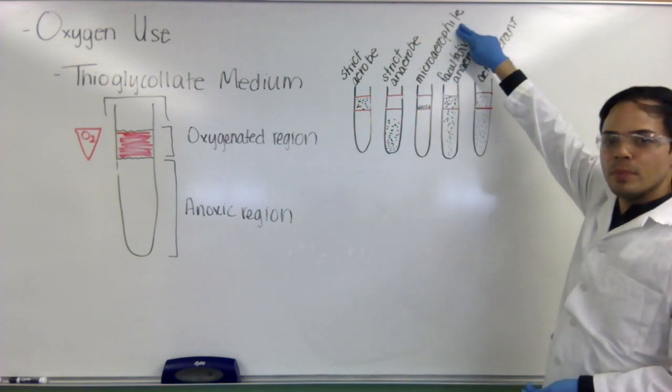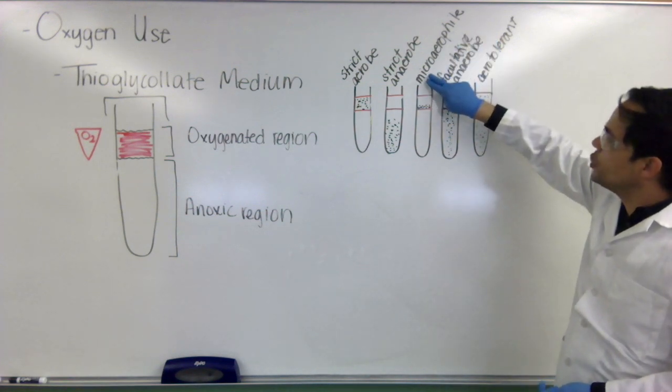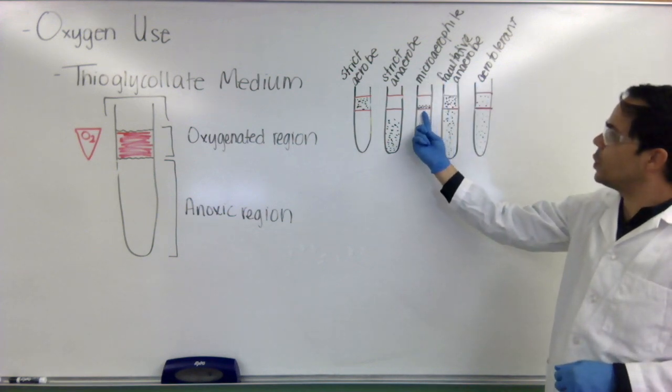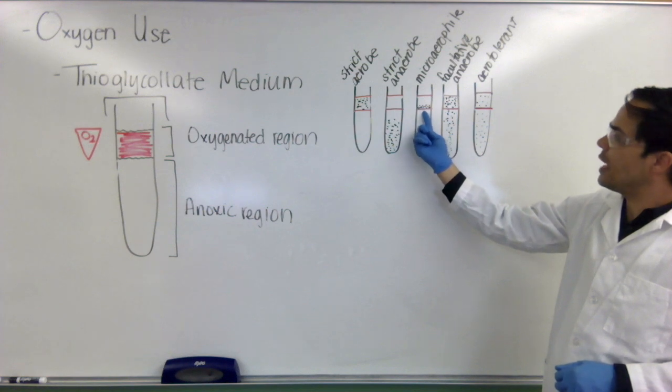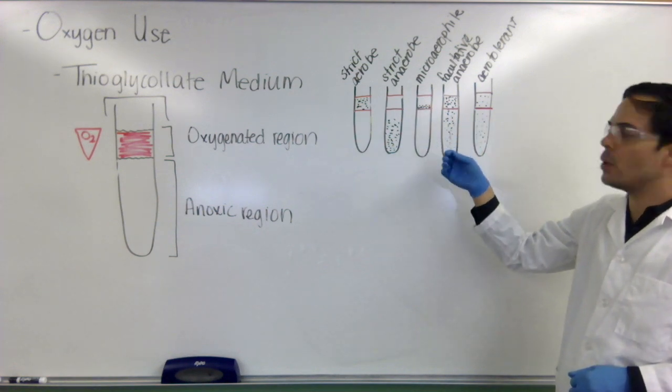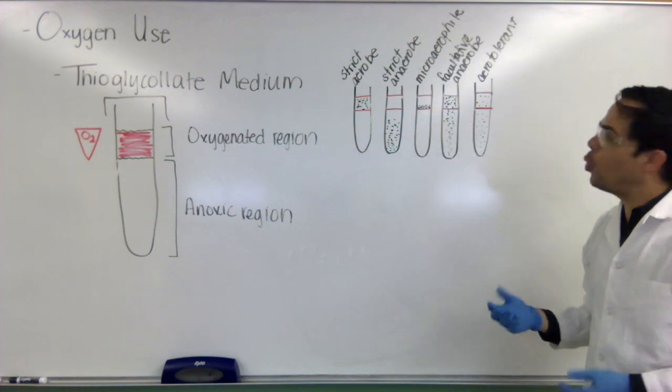Microaerophiles, meaning love of small amounts, is going to need just a little bit of oxygen so they tend to grow right here in the area where there's just a little bit of oxygen, just enough to support their growth but not enough to actually poison them.